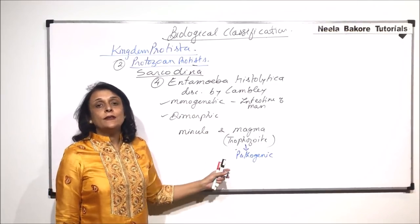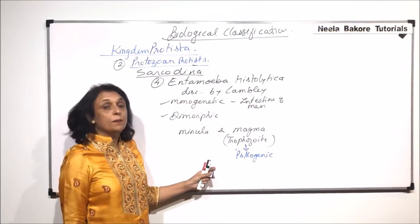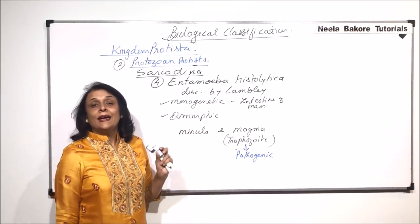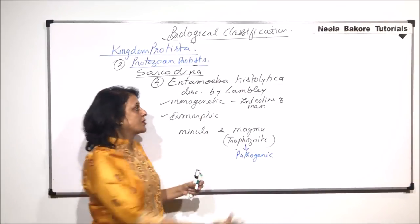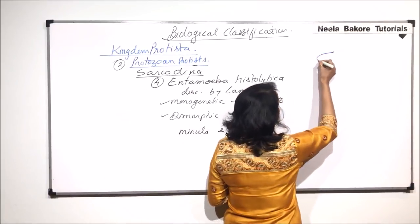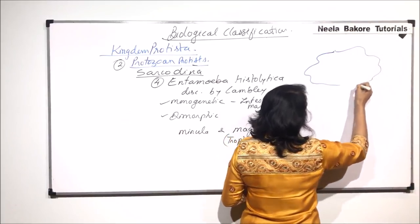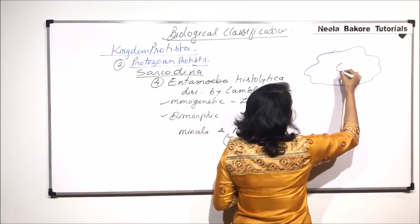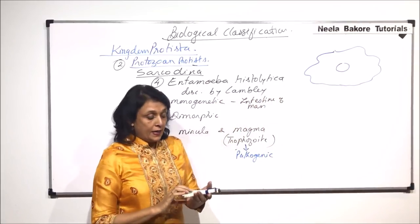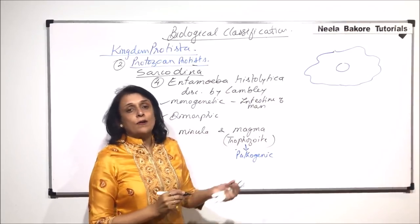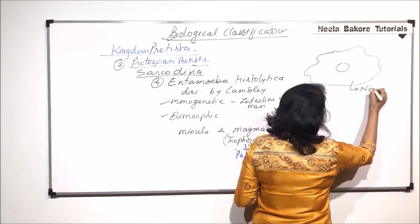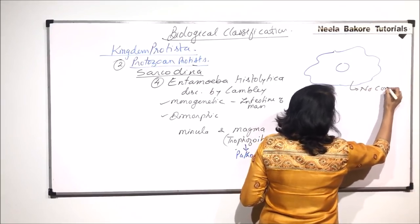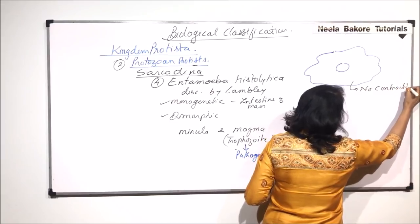Let us talk about its structure. Because it belongs to Sarcodina, it is irregular in shape since its locomotion is with pseudopodia. A prominent nucleus is present, but there are no contractile vacuoles in Entamoeba histolytica.